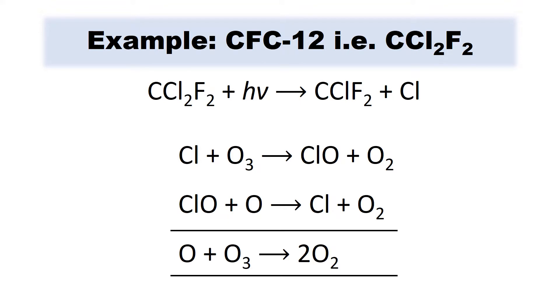Ozone depleting substances contain chlorine and bromine, and when they are broken down in the stratosphere, they form free radicals that act as catalysts for the destruction of ozone into oxygen.